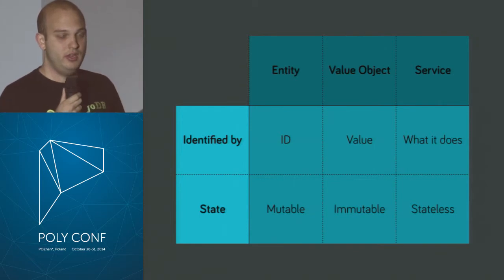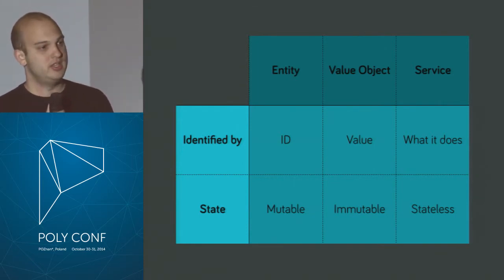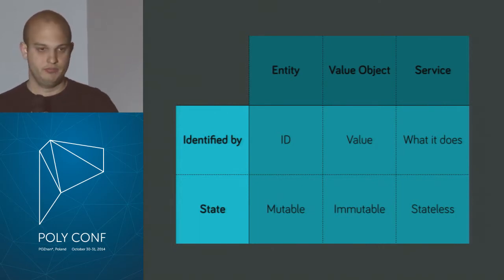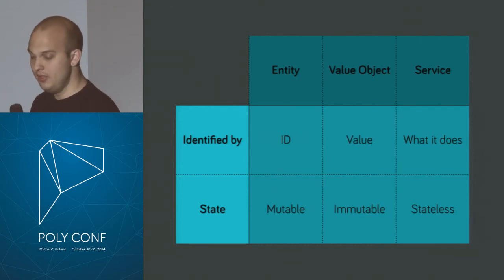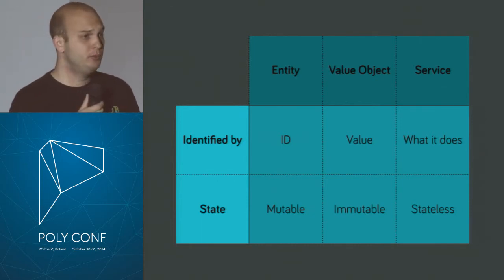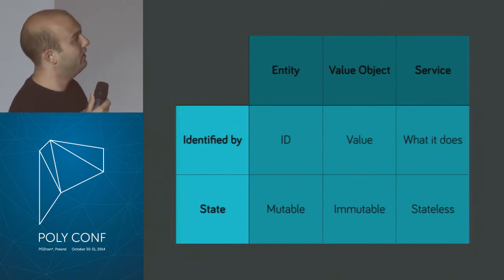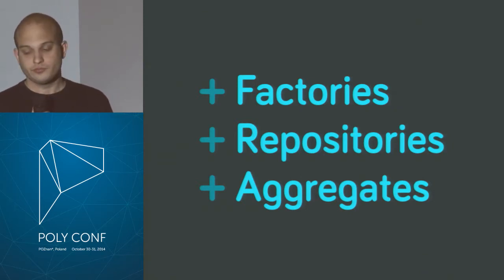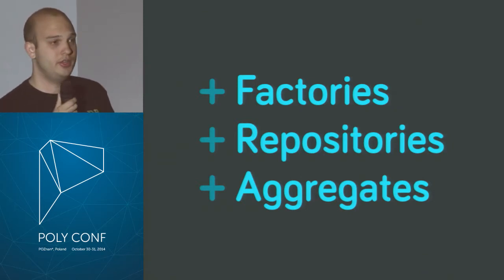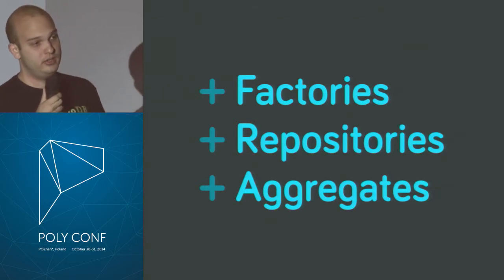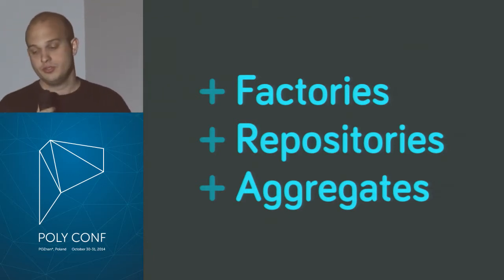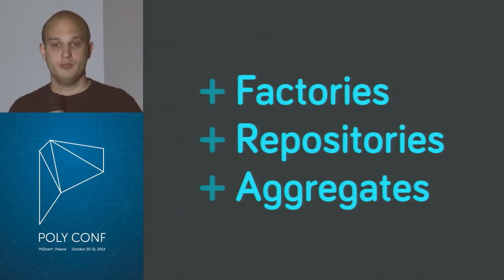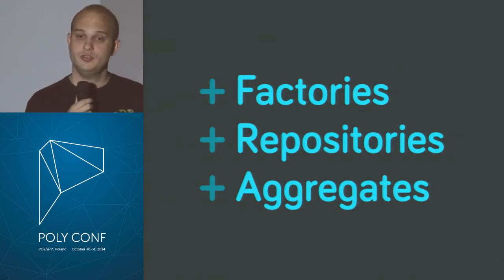Then we have services. They are only described by what they do — a mail sending service, for example — and they are stateless. If you tell the service to do the same thing twice, it will do exactly the same thing twice. Then we have factories, which most people know. And we have repositories — those are the things that can save other domain objects. They are mostly backed by a database, but from the domain world, you only see a repository, not the database.